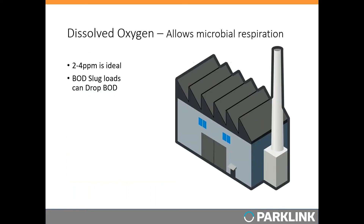The big, usually controllable factor for nitrifiers is dissolved oxygen. These nitrifying bacteria are aerobic microorganisms that require oxygen to respire and perform their oxidation to get energy. Two to four parts per million of dissolved oxygen is considered ideal. In plants with poor oxygen, it's less commonly an issue with plant design and more commonly due to poorly functioning aerators. Many plants regulate aeration basins using a dissolved oxygen probe, but sometimes the probe breaks or gives a false reading of adequate dissolved oxygen.